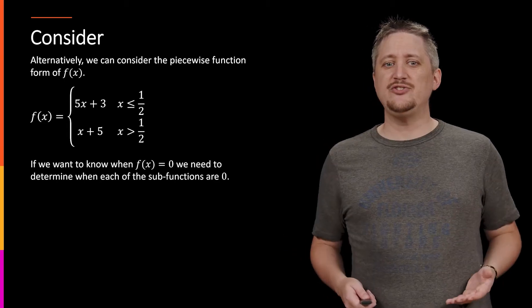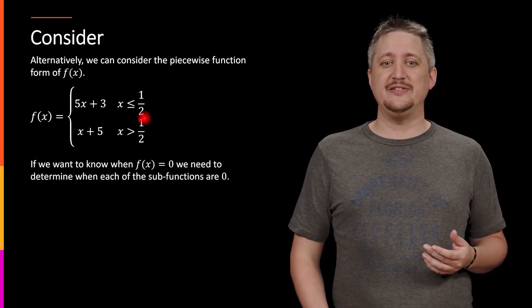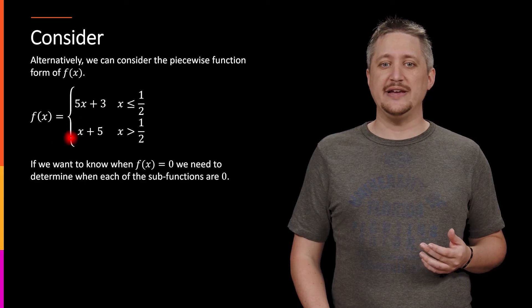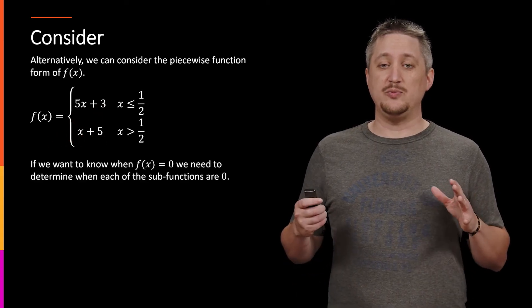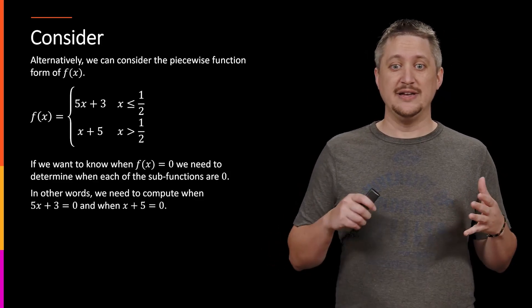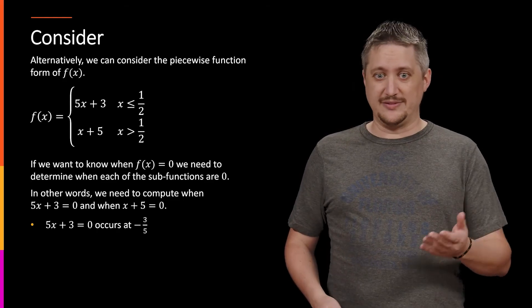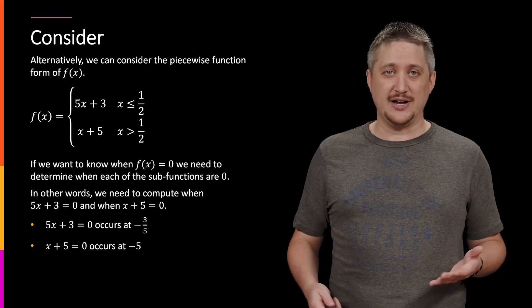And then we would take each of those sub functions, each of the pieces that we got, so 5x + 3 and the x + 5, and we figure out when those things are zero. So we would take the 5x + 3, set it equal to zero, and x + 5, set it equal to zero. And that would get us the -3/5 and the -5, just like before.